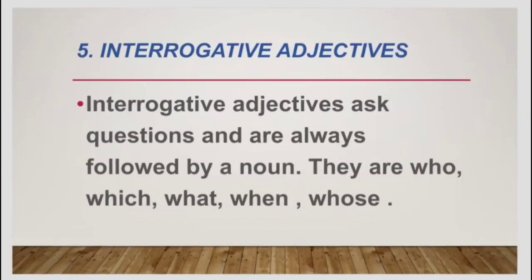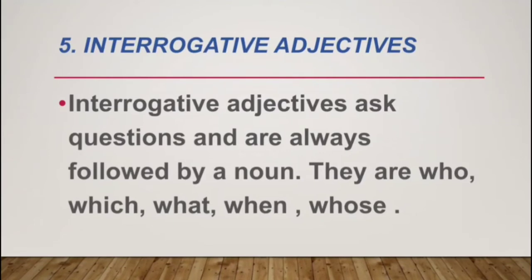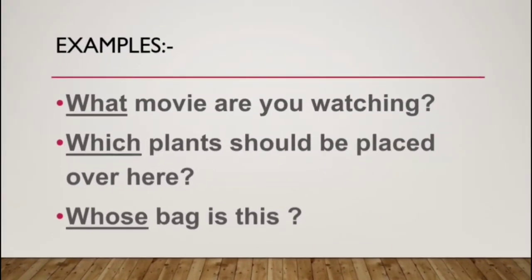Now we are moving to the fifth: interrogative adjective. Interrogative adjectives ask a question and are always followed by a noun. They are: who, which, what, when, and whose. When we ask questions, what words do we use? What is your name? How old are you? Which book is yours? Where do you stay? So which, what, where, when, who — all these words are meant for asking questions, and they come before the question. Examples: What movie are you watching? Which plant should be placed over here? Whose bag is this? So whose is also a question word.